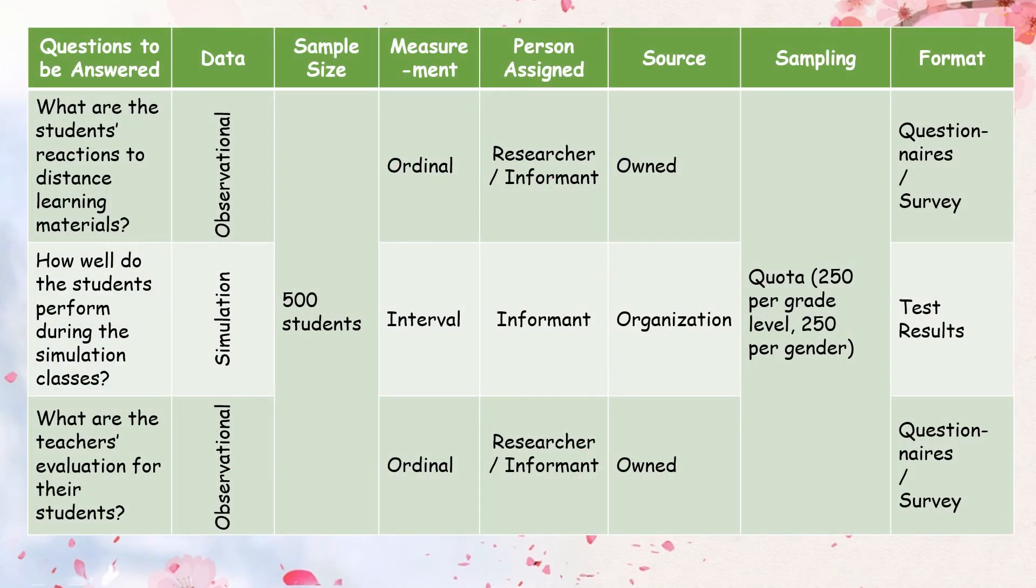Here is an example of a simple data collection plan. While your data collection plan template may vary slightly, it will likely contain many of the components found in this example. The research title for this example is the effect of distance learning modality to senior high school students overall school performance. So, the questions to be answered are: what are the students' reactions to distance learning materials? It will gather observational data for the sample size of 500 students. The measurement would be ordinal scale. The person assigned: researcher or informant, owned source. For the sampling, the sampling method would be quota, 250 per grade level or 250 per gender. And the format for the first question to be answered is questionnaire or survey.